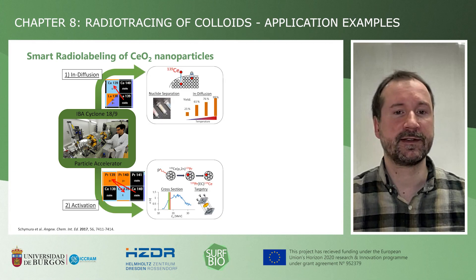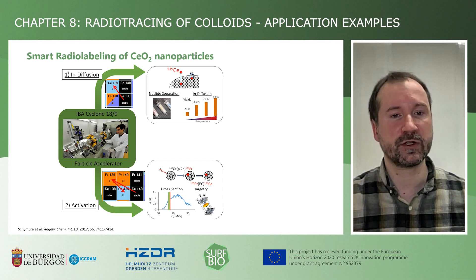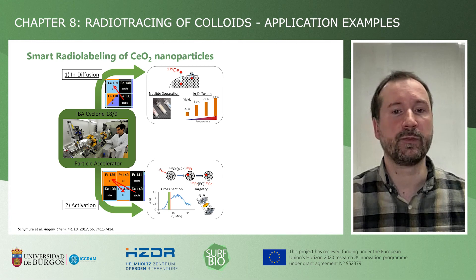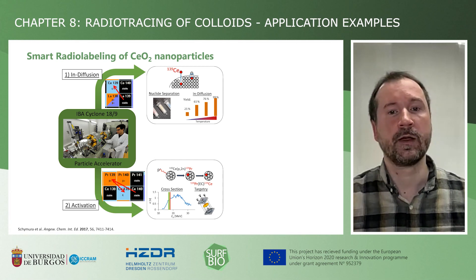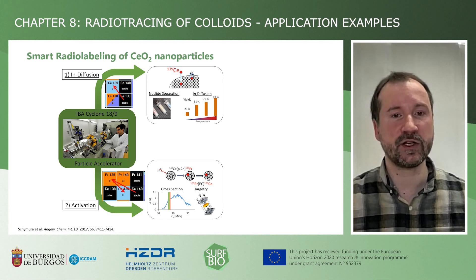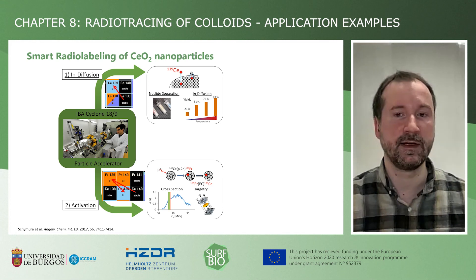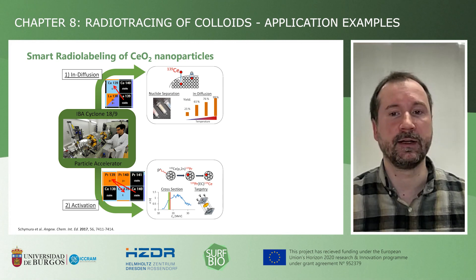The first is the indiffusion of the Cerium-139 radiotracer, which we produce via proton irradiation of a lanthanum foil, triggering a P-N reaction — proton in, neutron out. After production and separation of the radiotracer, we let it diffuse into a dry powder of nanoparticles at 300 degrees Celsius.